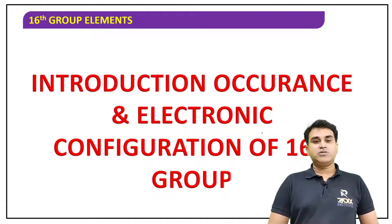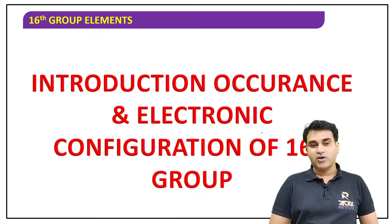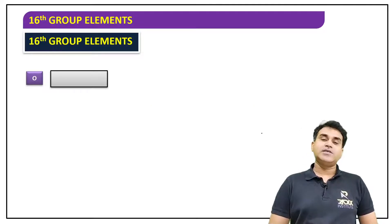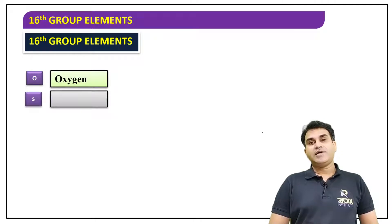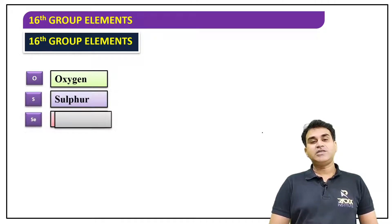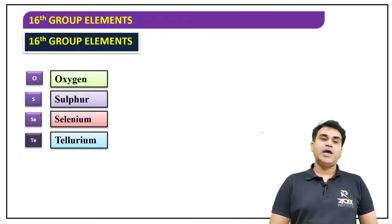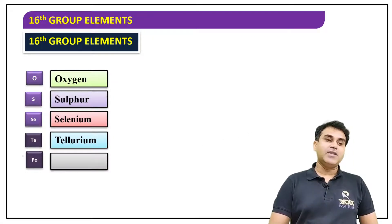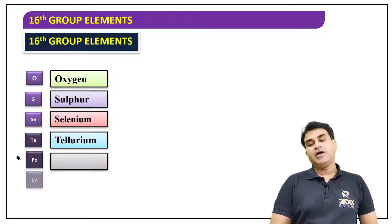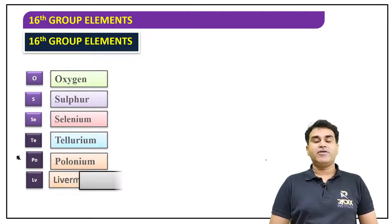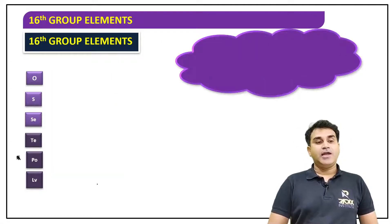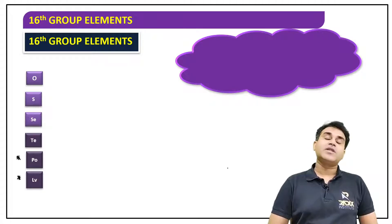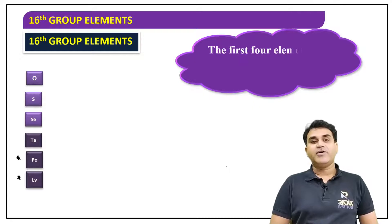First of all, we will talk about their general introduction, occurrence, and electronic configurations. The group members are: oxygen, sulfur, selenium, tellurium, and polonium. Among these elements, polonium is a radioactive element. The last element of the group is also a radioactive element.